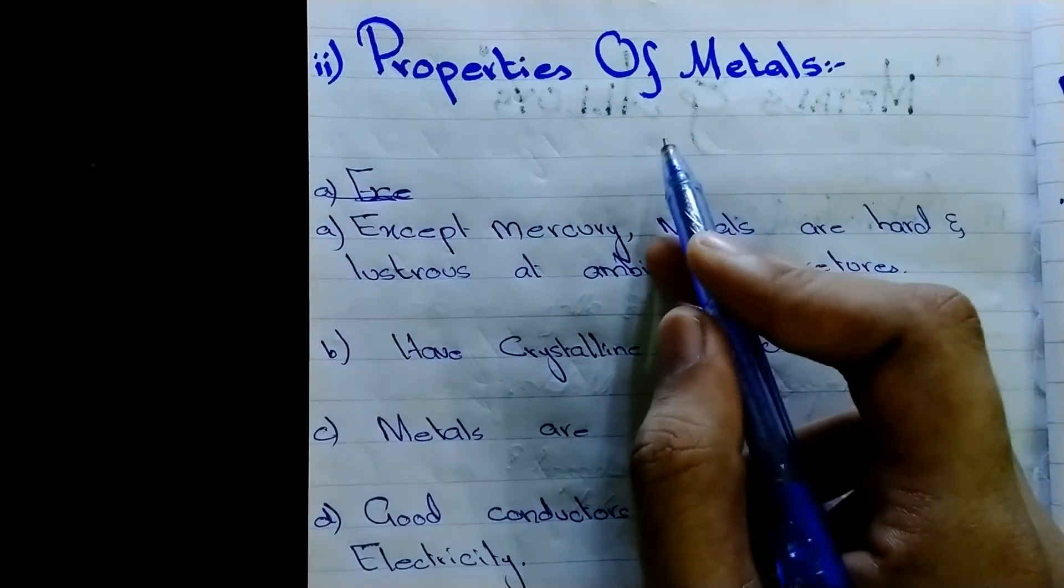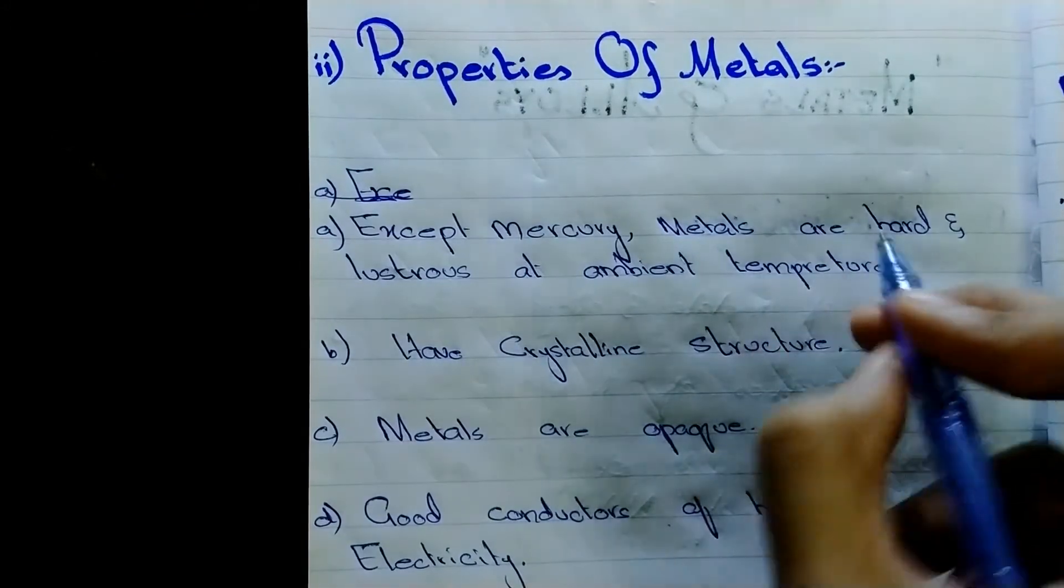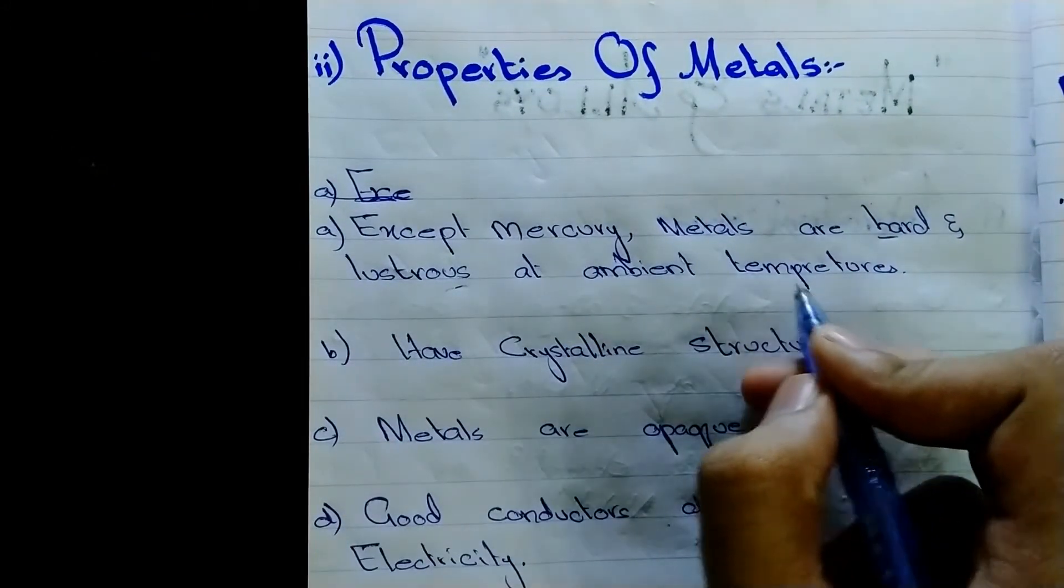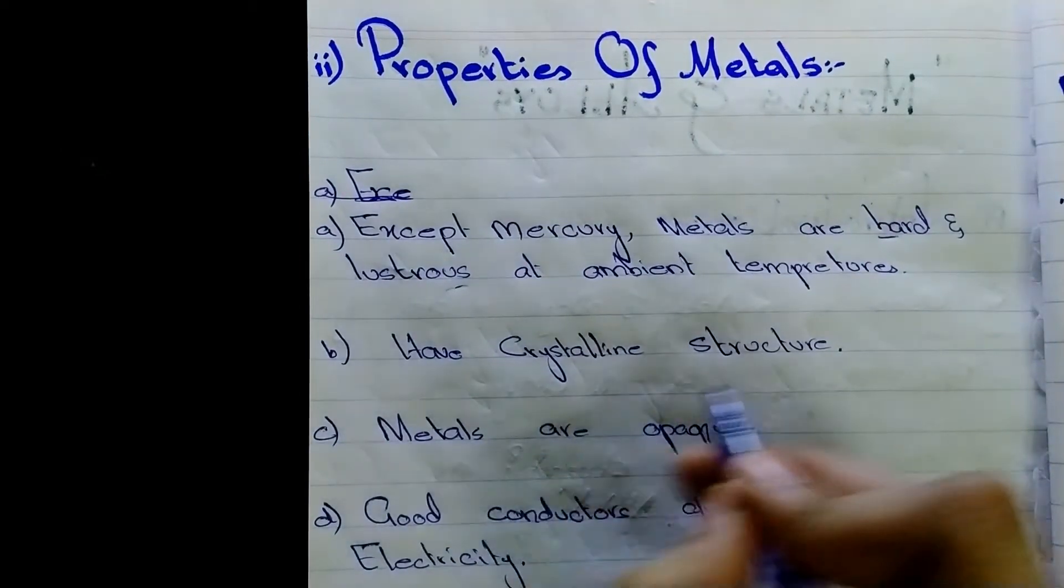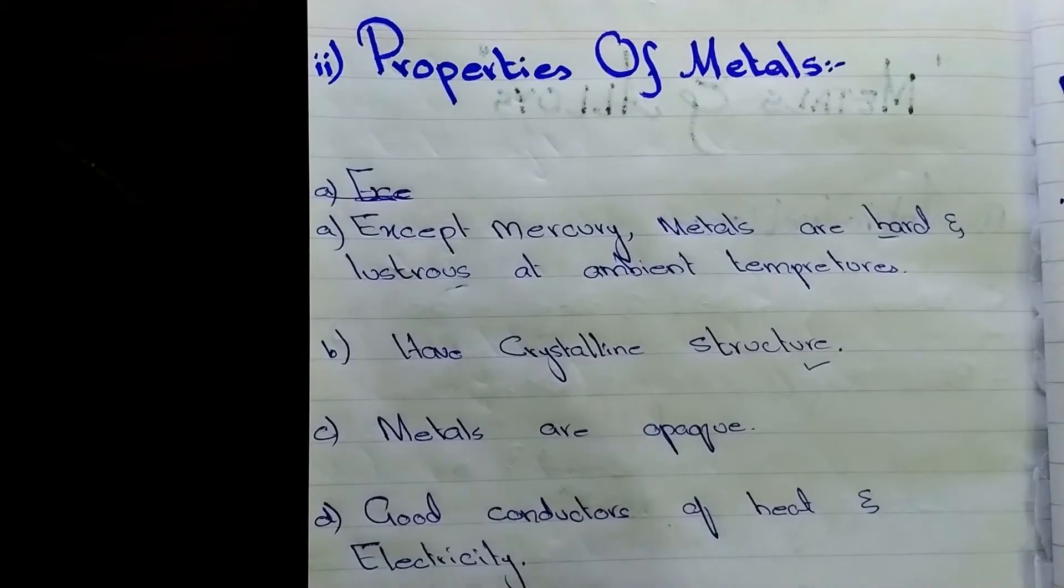Now, the properties of metals. Except mercury that is a liquid metal, metals are hard, lustrous at ambient temperatures. They have crystalline structure and metals are opaque and they are good conductors of heat and electricity.